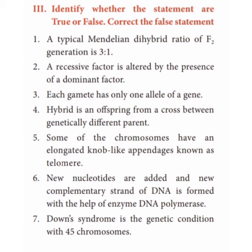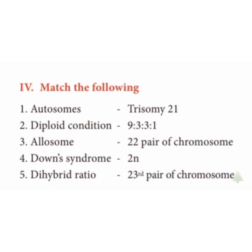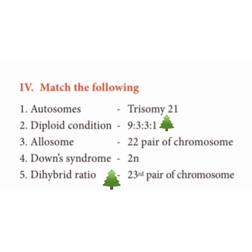Sixth, new nucleotides are added and new complementary strands of DNA are formed with the help of the enzyme DNA polymerase — True. Seventh, Down syndrome is a genetic condition with 45 chromosomes — False; it has 47 chromosomes. Matching: Autosomes — 22 pairs of chromosomes; diploid condition — 2n; allosomes — 23rd pair of chromosomes; Down syndrome — trisomy 21; dihybrid ratio — 9:3:3:1. Lesson 18 lesson 1 completed.